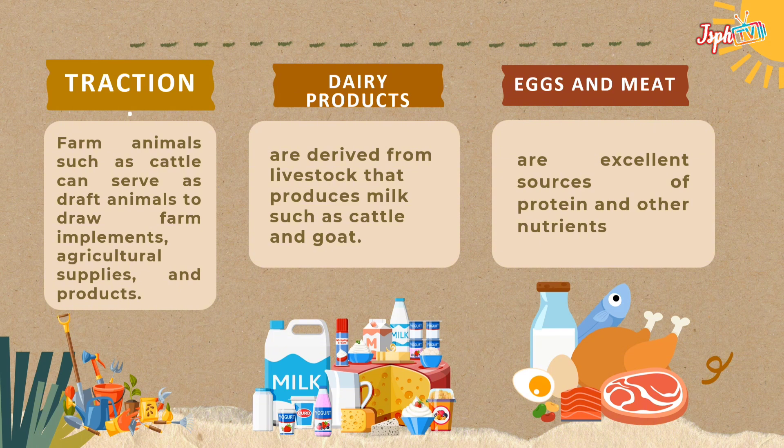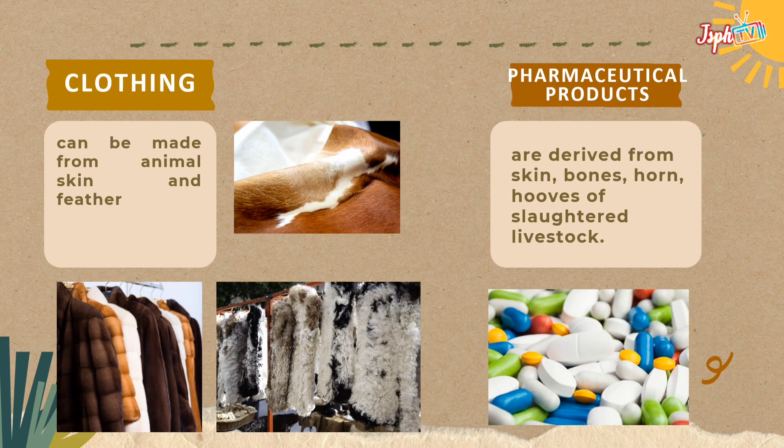Dairy products are derived from livestock that produces milk, such as cattle and goat. Eggs and meat are excellent sources of protein and other nutrients. Clothing can be made from animal skin and feather. Pharmaceutical products are derived from skin, bones, horn, and hooves of slaughtered livestock.